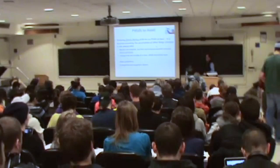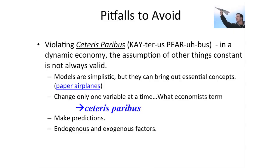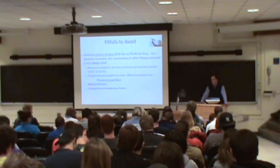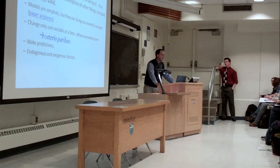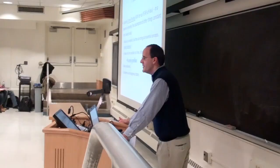The last part here in chapter one covers three different pitfalls that you're going to try to avoid throughout the course to help you think about the process. The first is what's called a violation of ceteris paribus, which is a Latin term that means 'other things constant.' Whenever you think of the economy — the individual decisions of households, firms, and governments — there is a ton of stuff going on. The economy is one complicated thing to try to figure out.